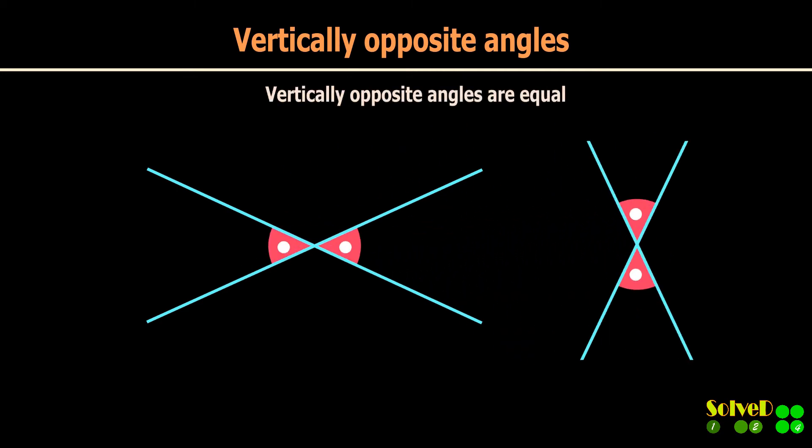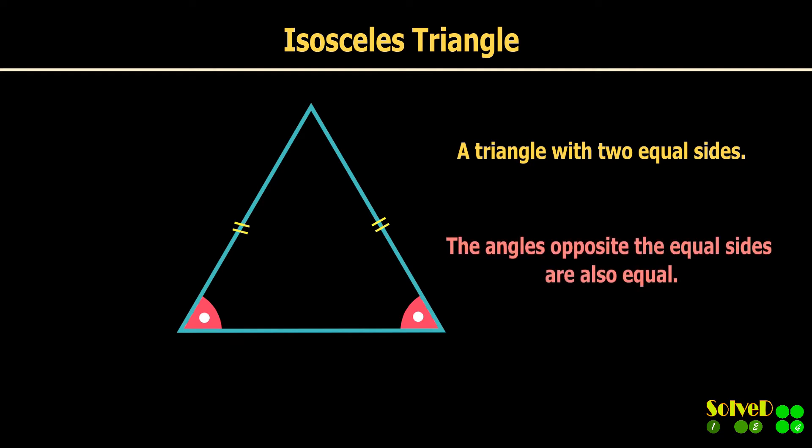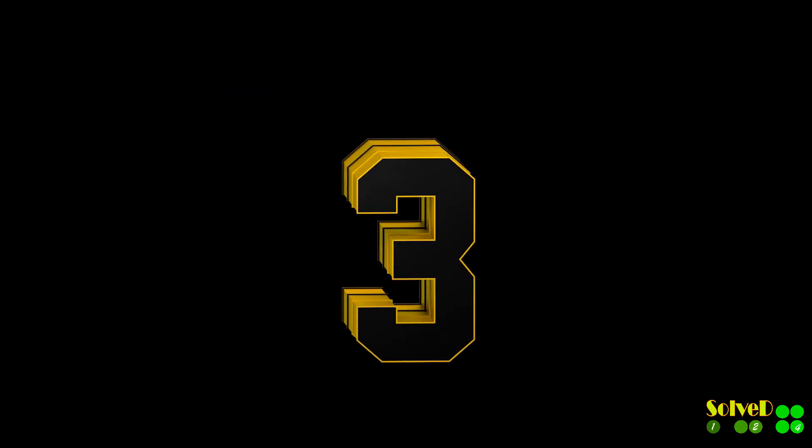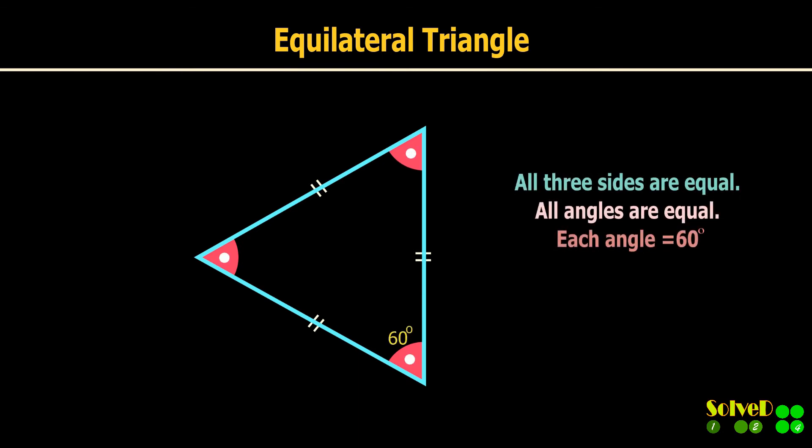Vertically opposite angles are equal. Isosceles triangle: two sides are equal and angles opposite to these equal sides are also equal. Equilateral triangle: all three sides are equal and all three angles are also equal, and each angle is 60 degrees.